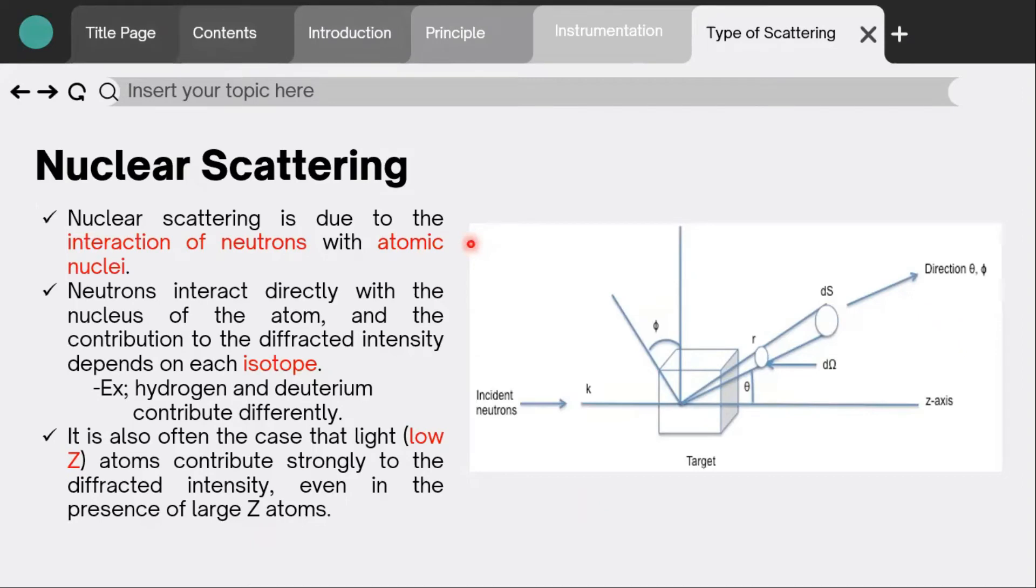This figure shows how a neutron is scattered by the target when the incident beam hits it. The incident beam encounters the target, and the scattered wave produced from the collision is detected by a detector at a defined position given by the angle phi within solid angle d omega.